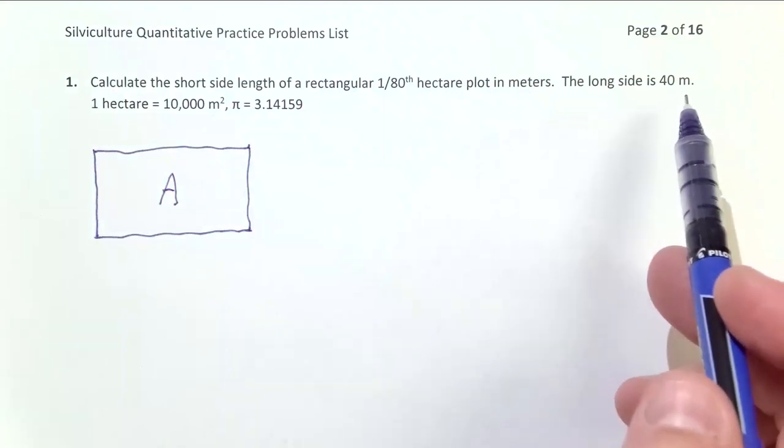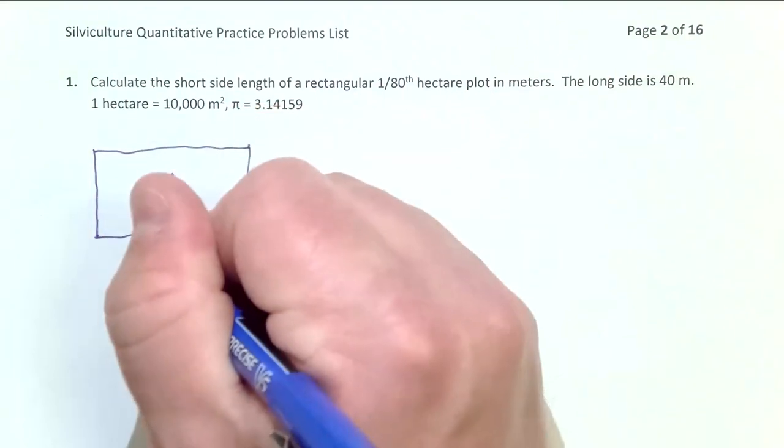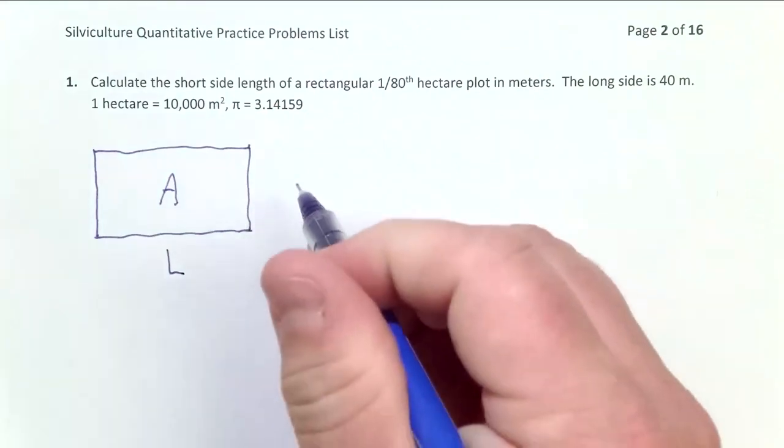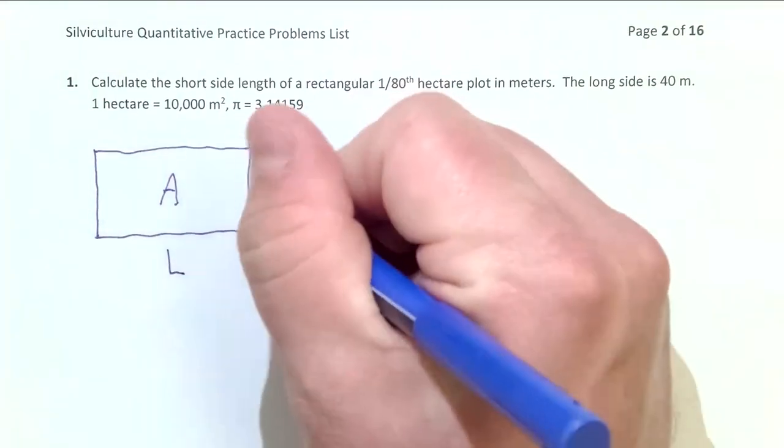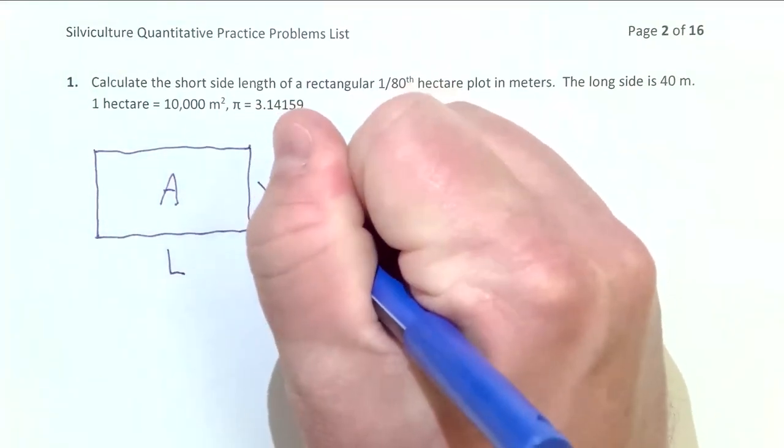And it tells us the long side is 40 meters. So we know the long side. And what we're trying to figure out is the short side or the width. So I'll write it like that.